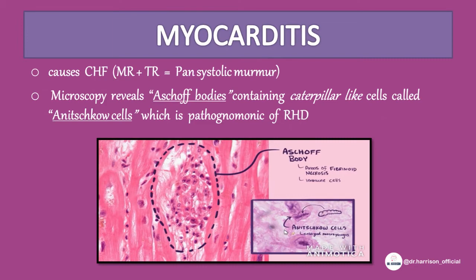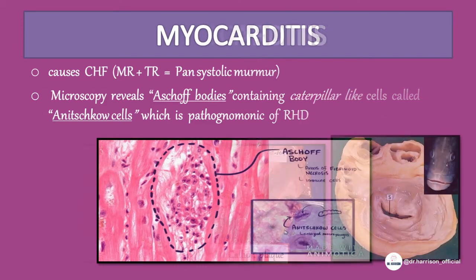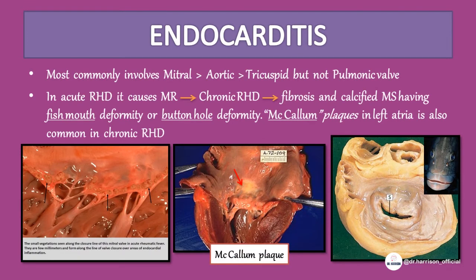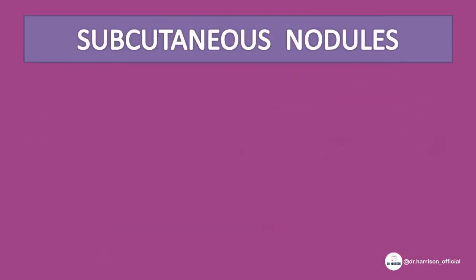Myocarditis causes congestive heart failure. Macroscopy reveals Aschoff bodies containing caterpillar-like cells called Anitschkow cells, which is the pathognomonic finding of RHD. Endocarditis most commonly involves the mitral valve but not the pulmonic valve. In acute RHD it causes mitral regurgitation, but later progresses to chronic RHD with fibrosis and calcified mitral stenosis, giving a 'fish mouth' or 'buttonhole' deformity. MacCallum plaques are present in the left atria in chronic cases. Hence, RHD is said to 'lick the joints and bite the heart.'